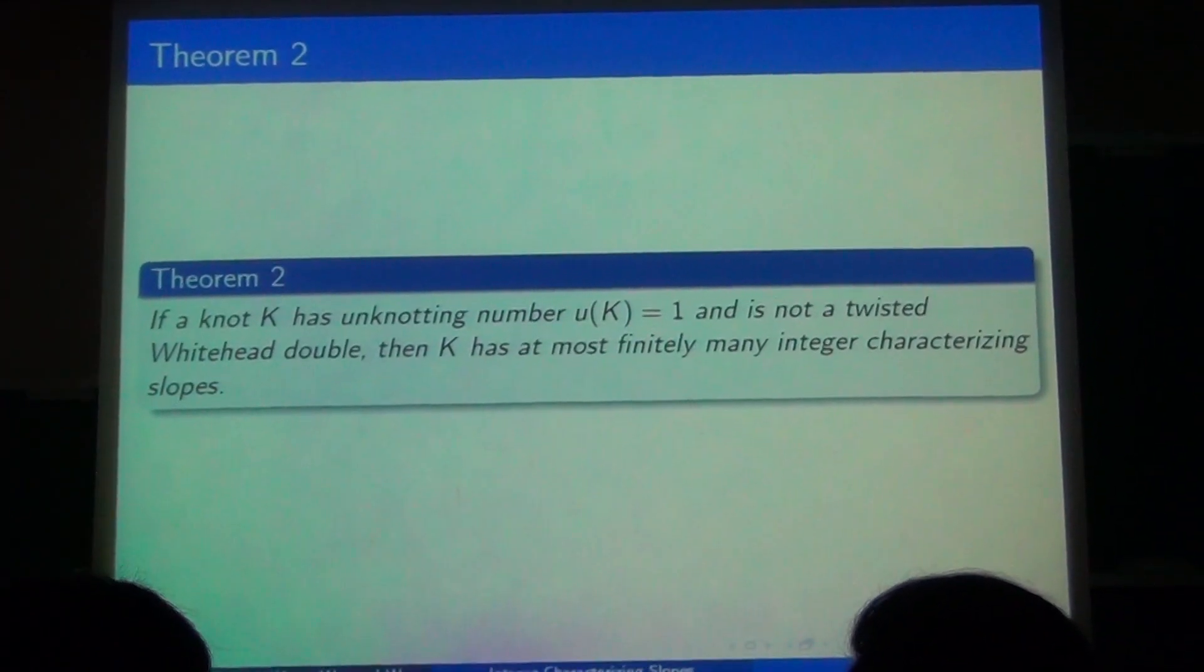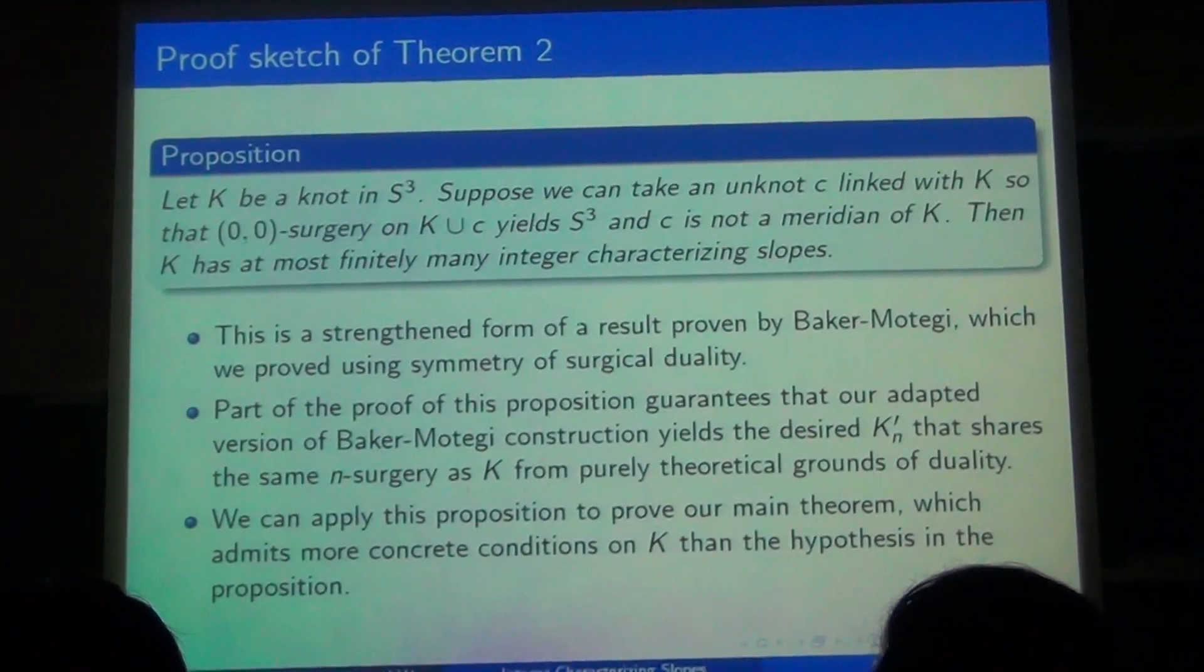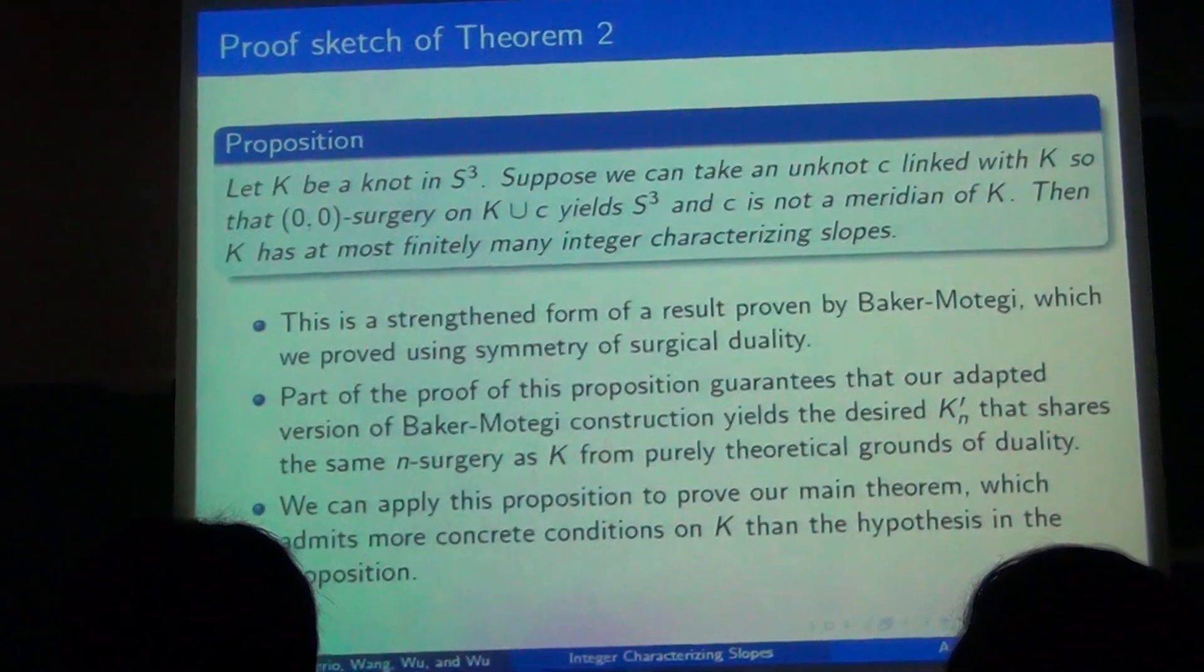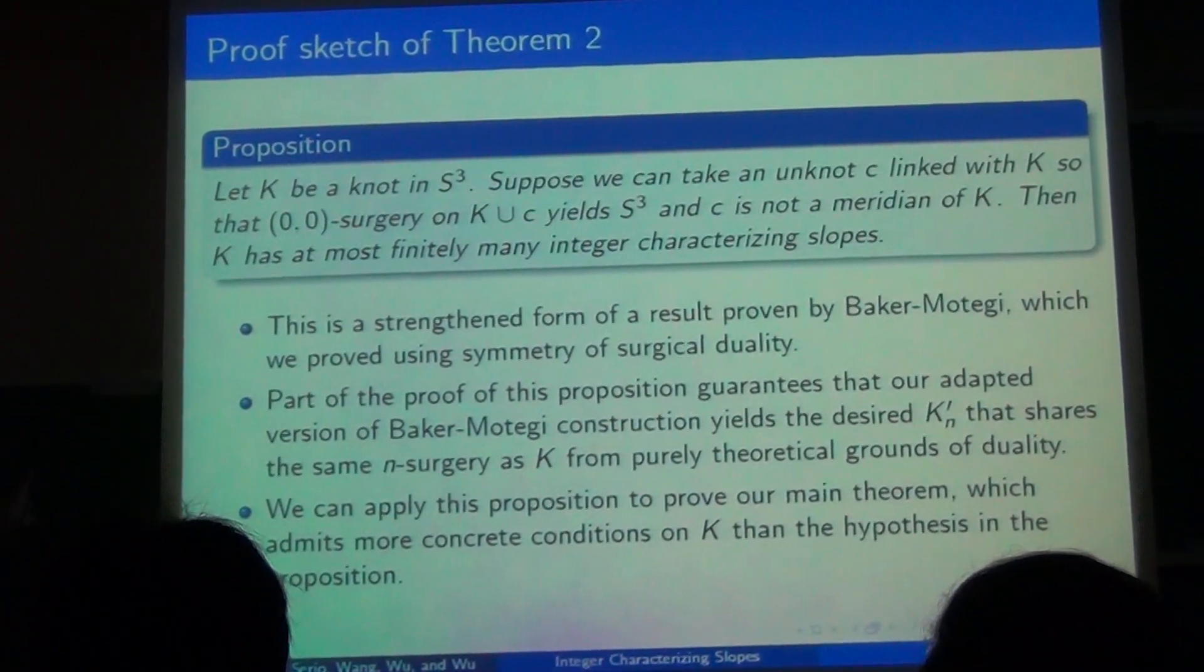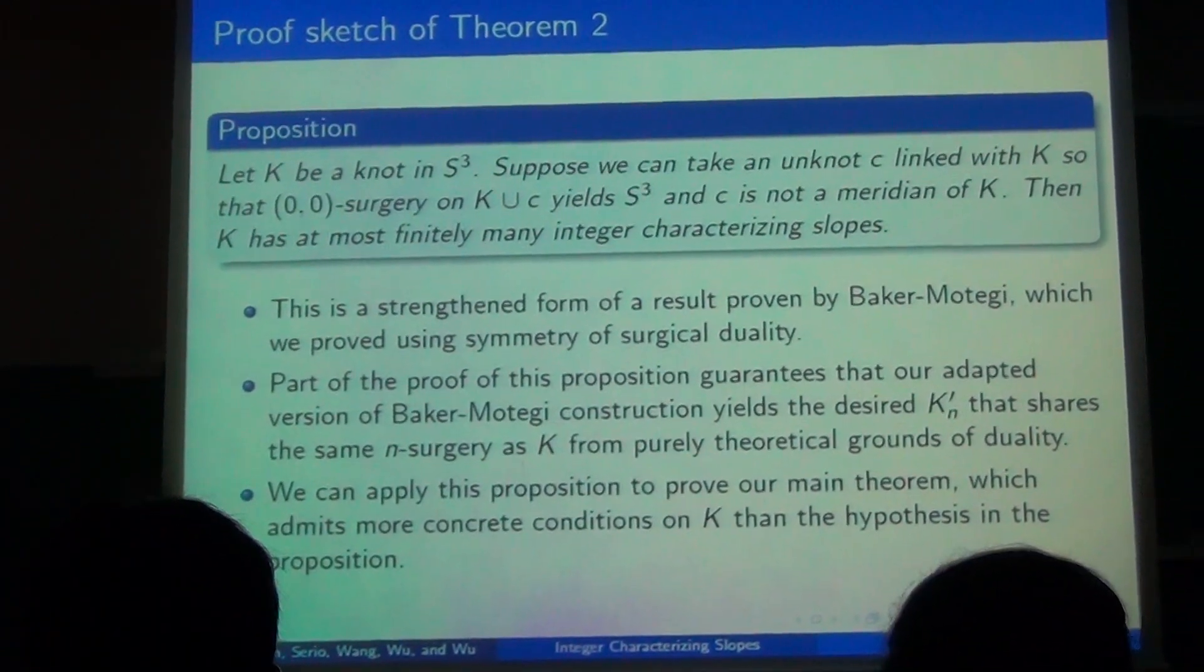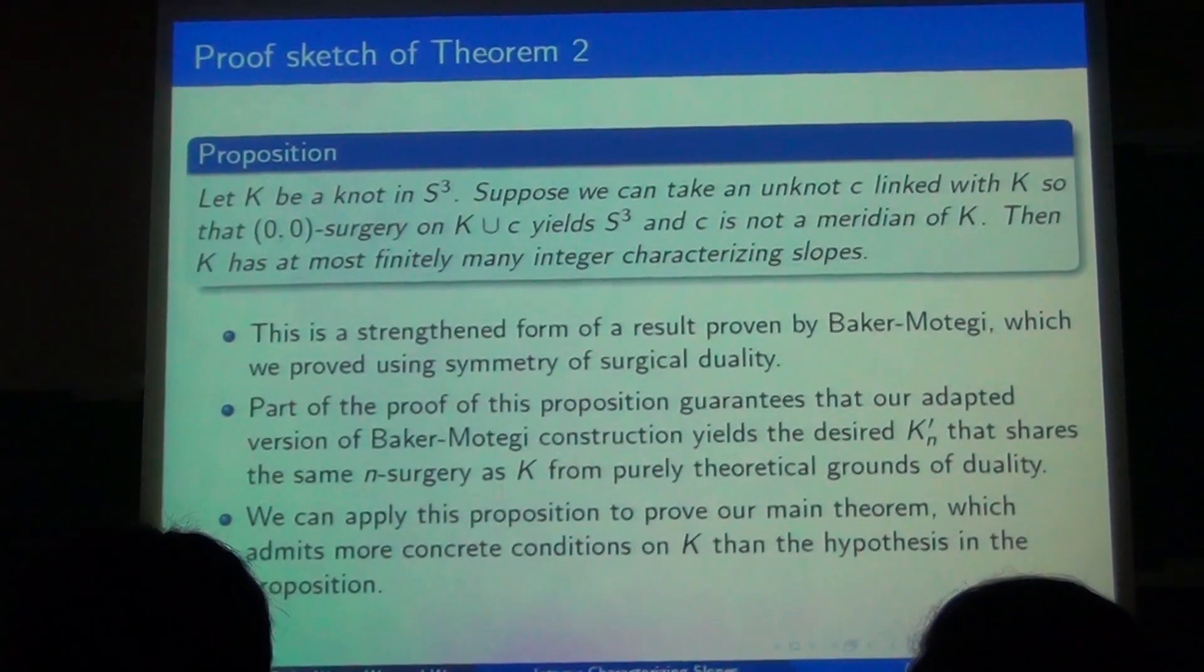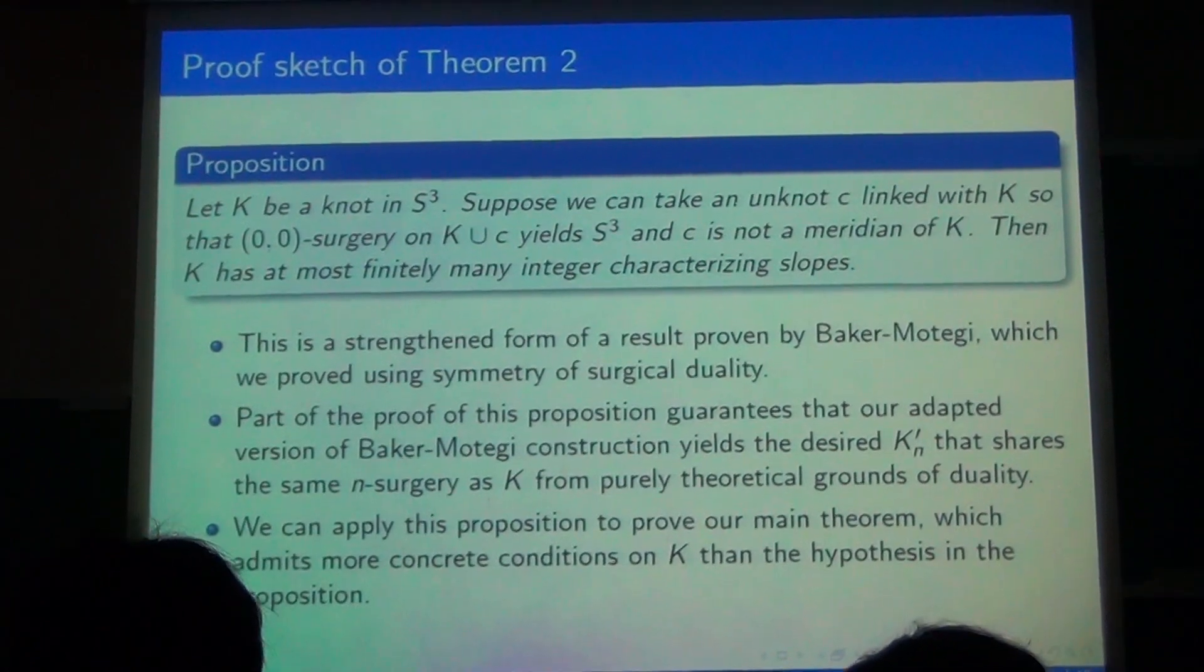So proof, here's theorem two again. It is a more theoretical result than the previous one. And the first step is that we strengthen the result shown earlier by Baker-Motegi. We just check those several lemmas and theorems on paper and observe that it boils down to a symmetry of duality, and then extend it to a link. And part of our proof for this proposition also guarantees our adaptation of Baker-Motegi's theorem to explicitly carry out zero-zero surgery on K union C. So it actually yields K_0 prime without any Kirby calculus. And then if you twist that n times, you get K_n prime that we did.